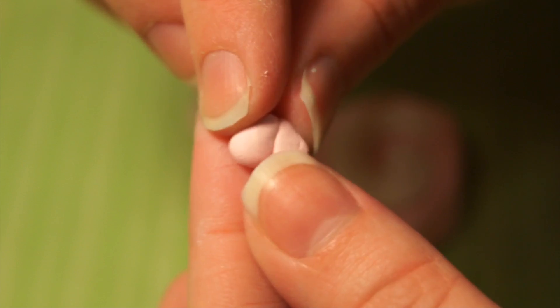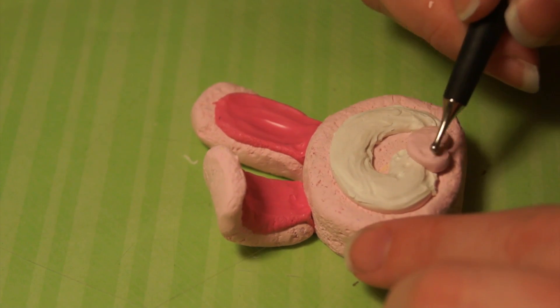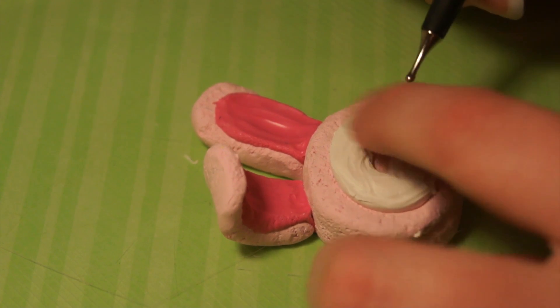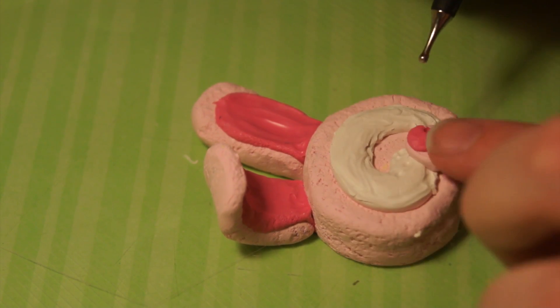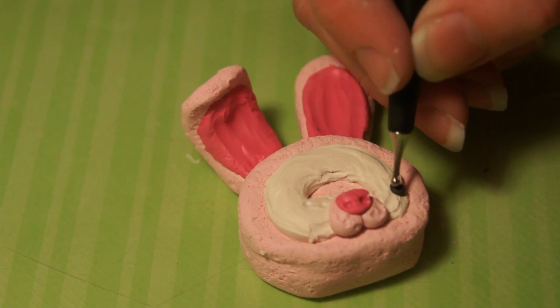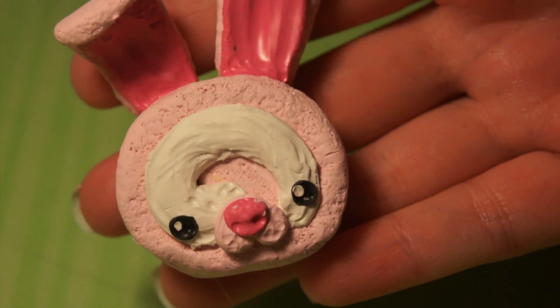I'm just going to smooth it out so that there's not such a line and attach that on, and then I'm going to attach a nose. This nose is a little bit too big and I'm not extremely happy with it because I think it makes it look kind of like a pig, but oh well. And then I'm just going to add eyes and white specks like I did on the ducky, and there's our bunny.